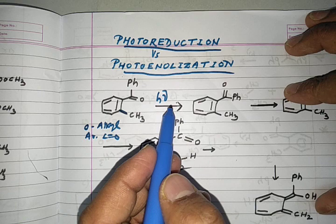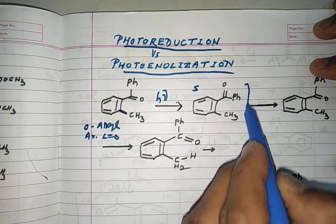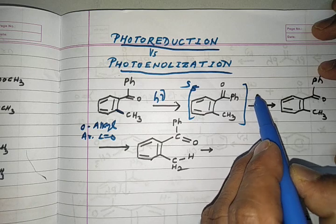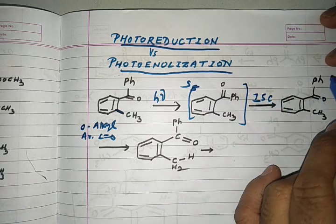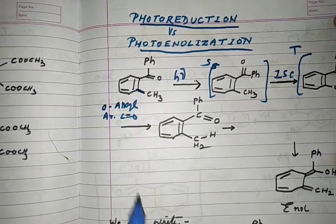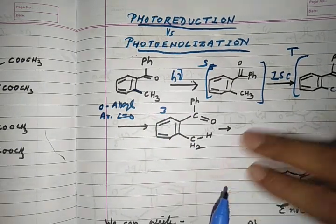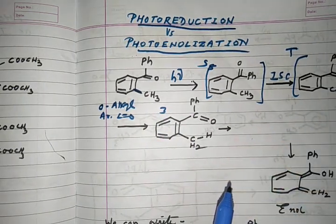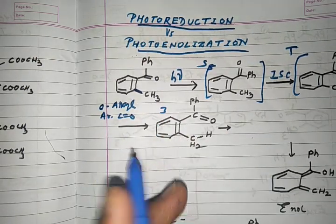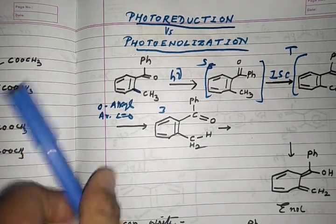When such carbonyl compounds having an ortho alkyl group are subjected to photochemical radiation in the UV-visible range, there is formation of a singlet excited state. The singlet state then undergoes intersystem crossing to form the triplet state.